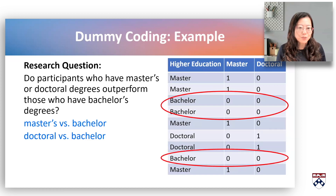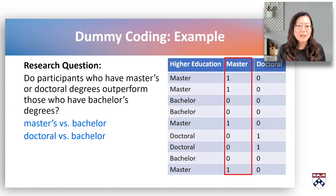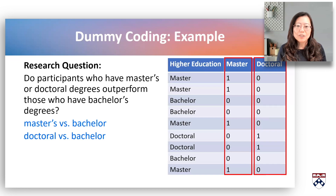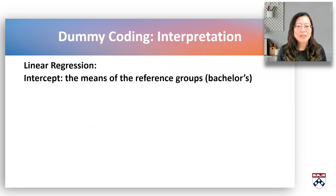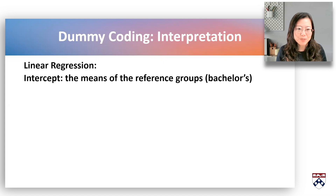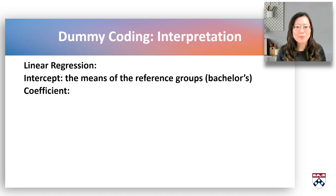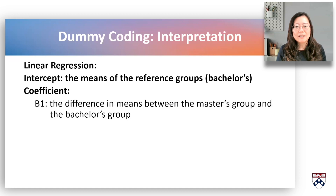The bachelor group is a reference group assigned the value of 0. In the masters variable, the master group is assigned the value of 1, so we can compare the masters group with the bachelors group. In the doctoral group, the doctoral group is assigned the value of 1, so we can compare the doctoral group with the bachelors group. In linear regression, the intercept is the mean of the reference groups, which are coded as 0s in all the dummy coded variables. In this case, the intercept is the mean of the bachelors group. The coefficient equals the difference between the mean of the reference group and the coded-1 group: beta 1 is the difference between the masters group and the bachelors group, and beta 2 is the difference in means between the doctoral group and the bachelors group.